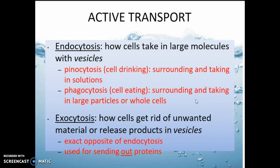The last two forms of active transport are endocytosis and exocytosis, which are opposites of each other. Endocytosis — think of the prefix 'endo' meaning 'in' — is how cells take large molecules into the cell using something called a vesicle. Basically, they wrap up the molecule in a little piece of cell membrane. It's kind of like if you had a great big winter coat on and you found a cold kitten, and so you just wrap your coat around the kitten to hug it close to your body. That would be endocytosis.